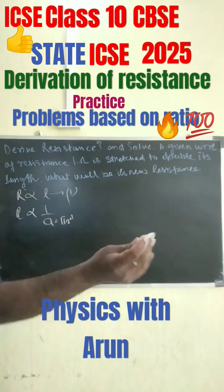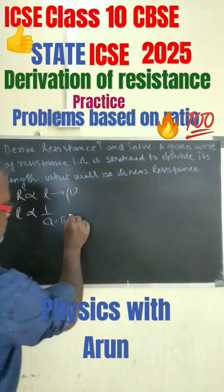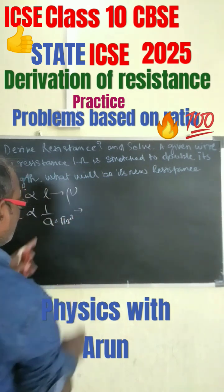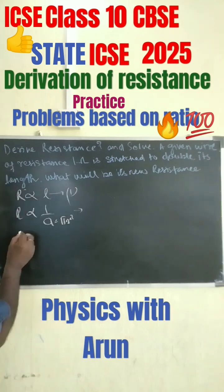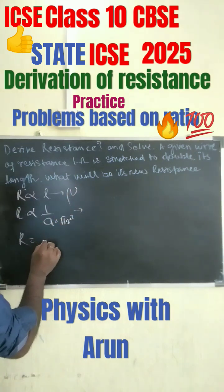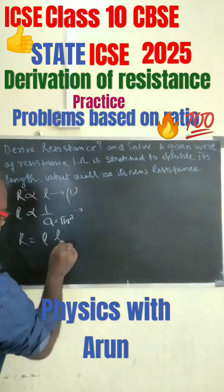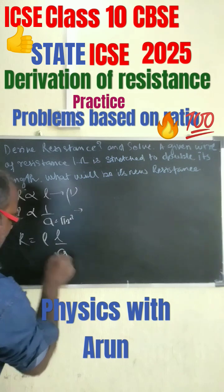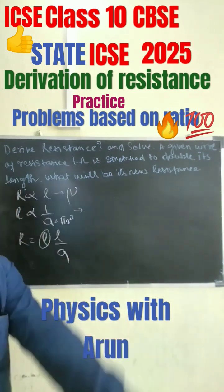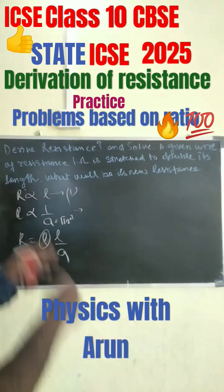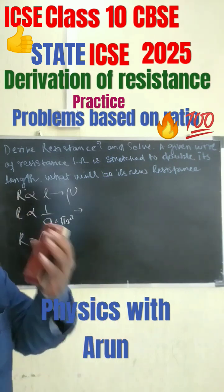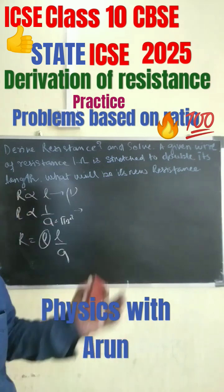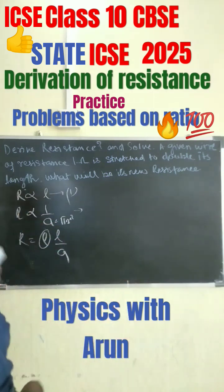Resistance is inversely proportional to the area of the cross-section, that is pi r square for the wire. For a thick wire, it is pi r square — more is the area, less is the resistance. Combining these two, R equals rho into l by a. Here, rho is the resistivity of the wire, which is a property of the material, and it is different for different materials.